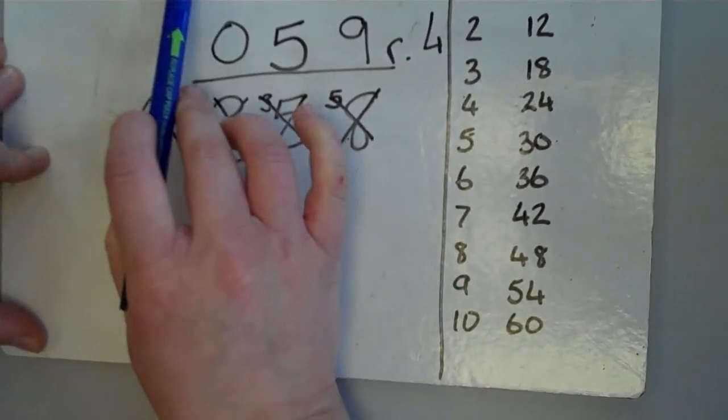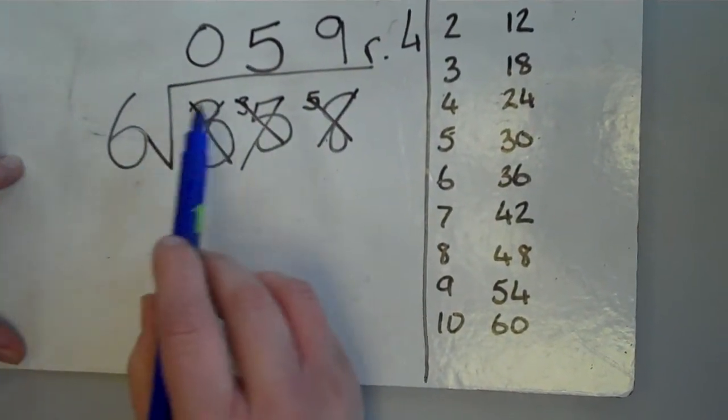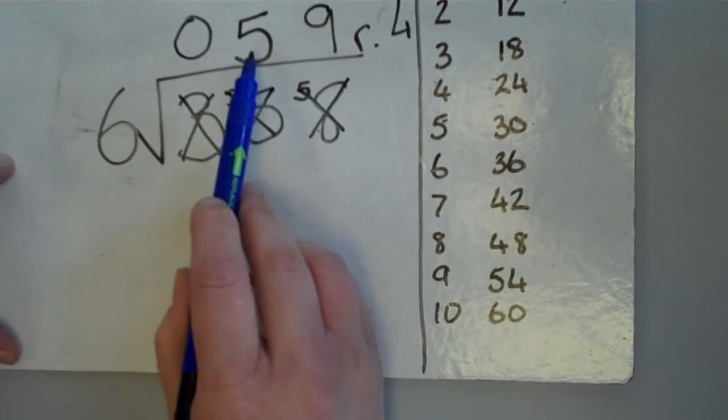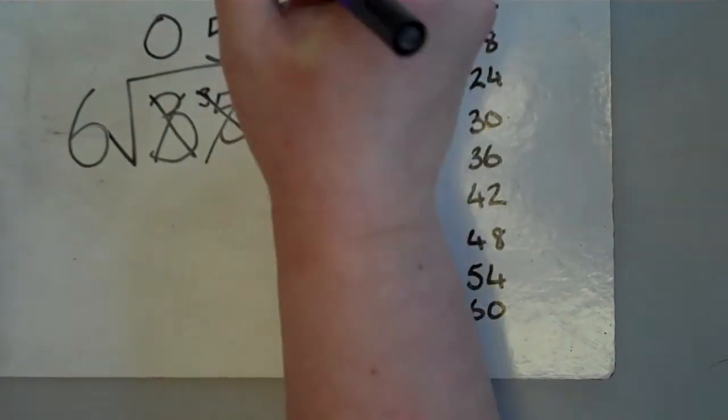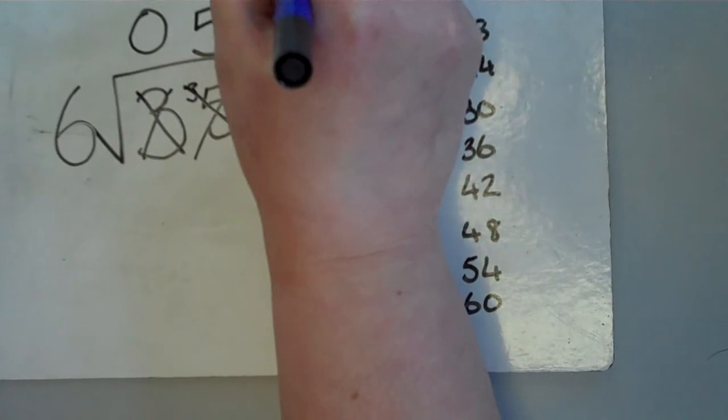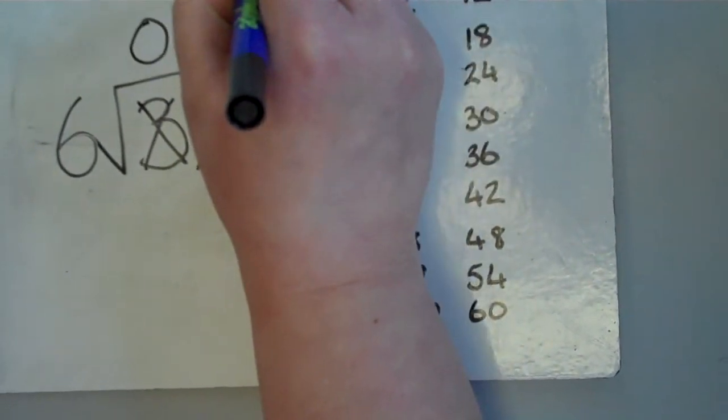The answer to 358 divided by 6 is now 59 remainder 4. Thank you.